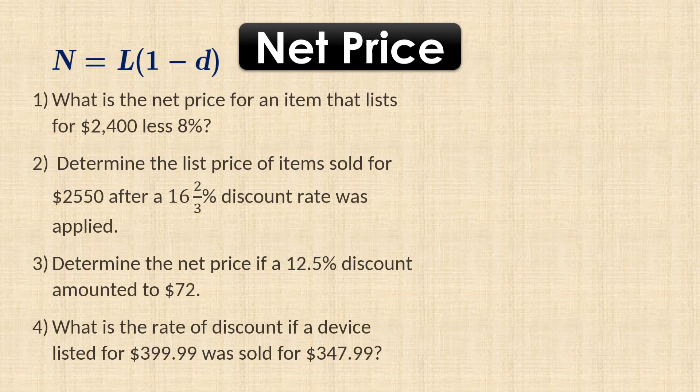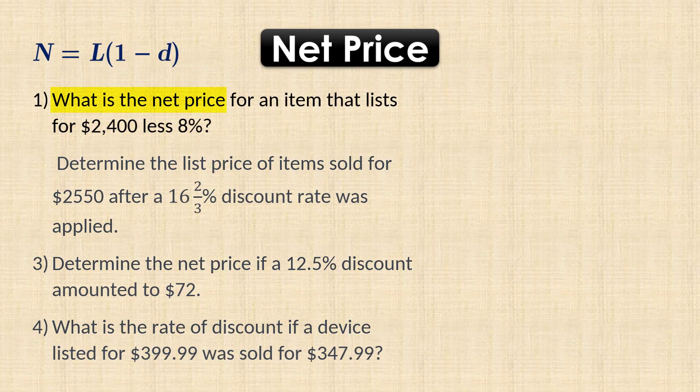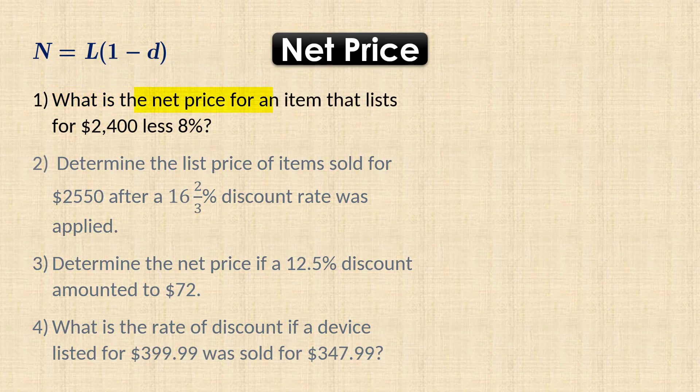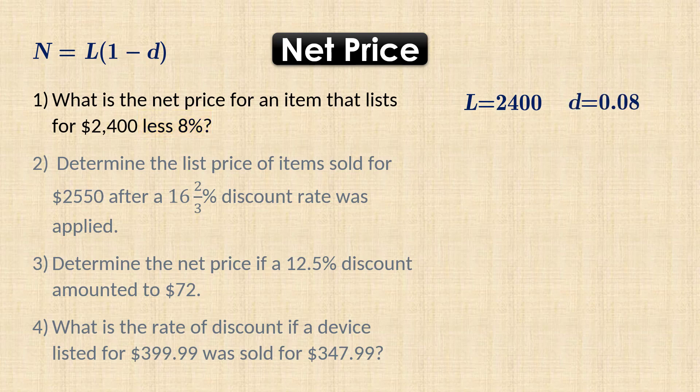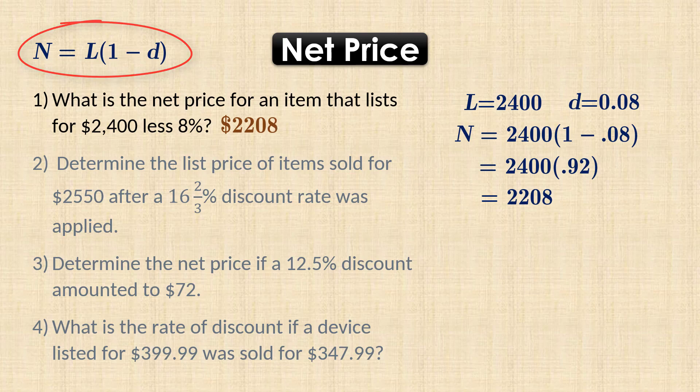Now let's look at some questions. In the first question, we need to calculate the net price when the list price is 2400, and less 8% here means that the discount rate is 0.08. Substituting that in the net price formula gives 2208.